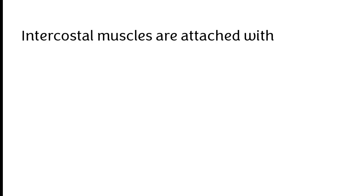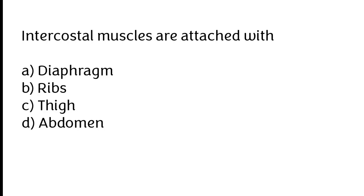Intercostal muscles are attached with: diaphragm, ribs, thigh, abdomen. The correct answer is option B — intercostal muscles are attached with the ribs.